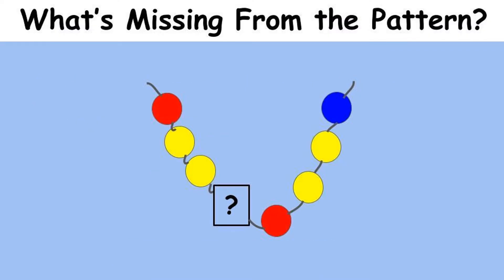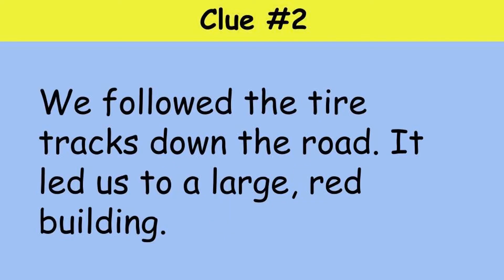Let's take a look at our next pattern. Our second pattern looks like a necklace. Look carefully at the beads' color pattern to figure out what the missing one is. The strategy I like to use is to change each colored bead to a letter: each red bead is an A, each yellow bead is a B, and each blue bead is a C. If you said a blue bead was missing from this repeated pattern, then you are correct. This pattern repeats two times. Here's your second clue: we follow the tire tracks down the road and it leads to a large red building. Where do you think that large red building is?